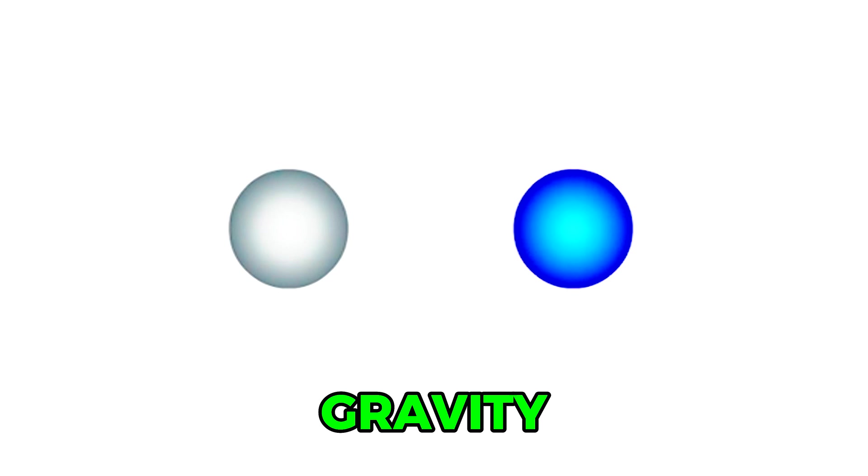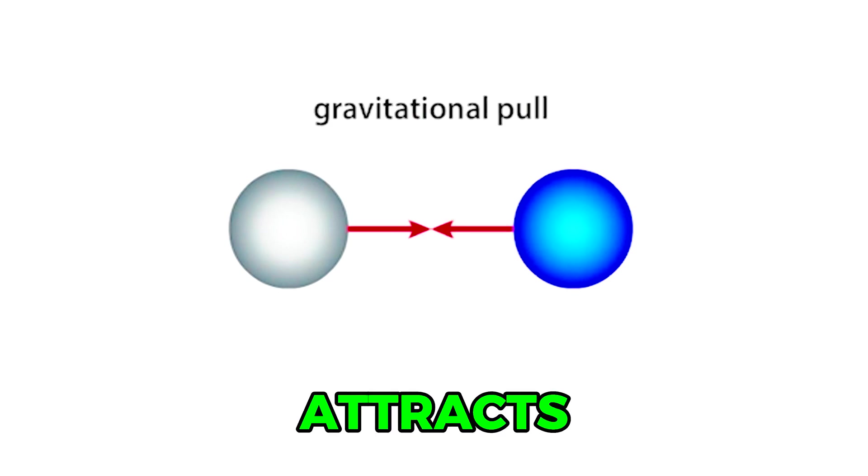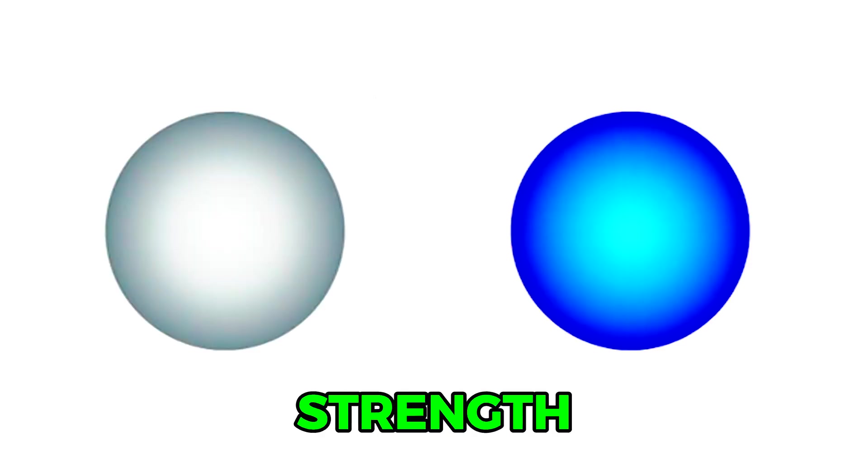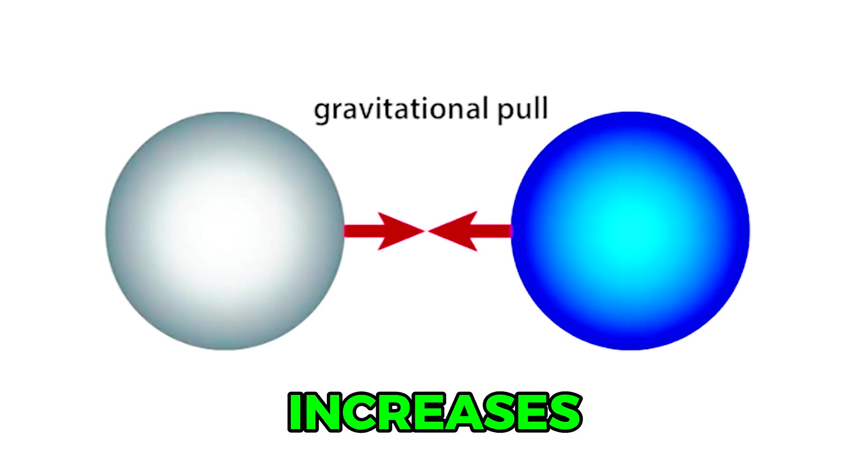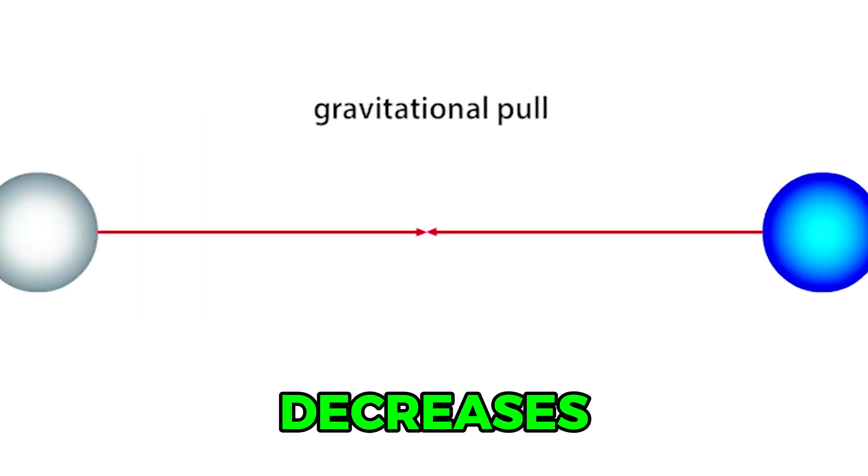The law of gravity states that every object in the universe attracts every other object. The strength of gravity increases as mass increases. The strength of gravity decreases as distance increases.